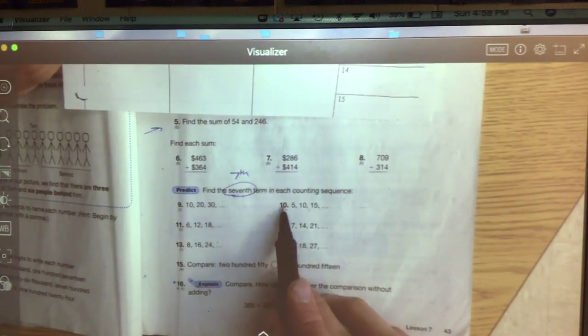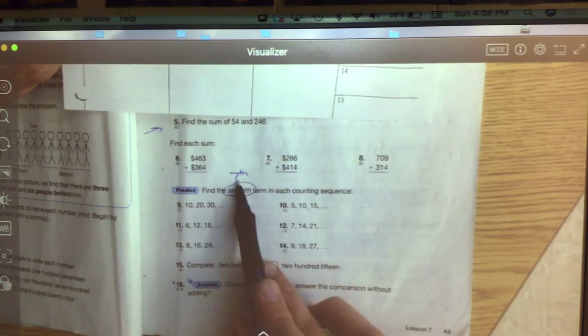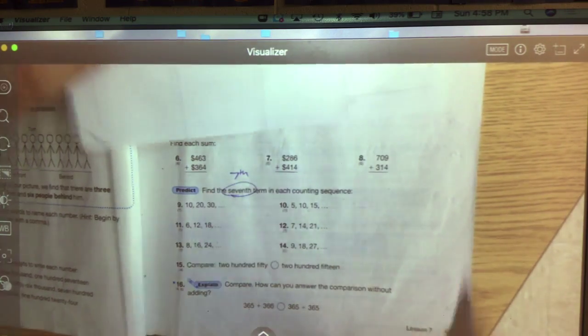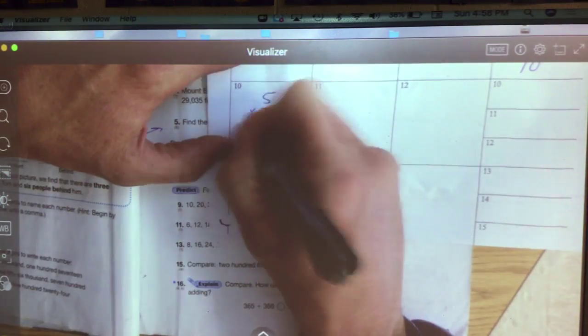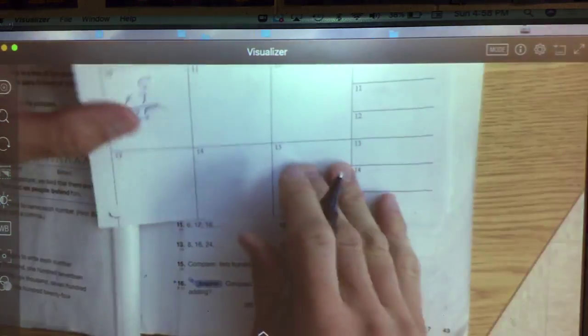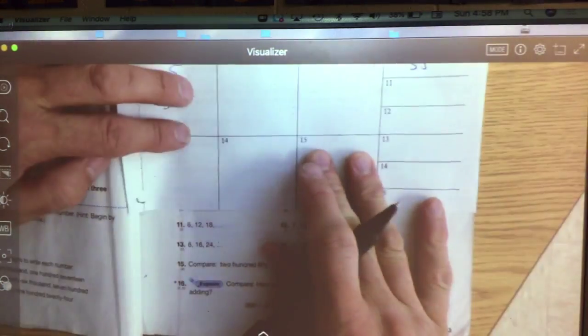Some of you guys were catching on to this the other day on our Zoom call and were pointing these little tricks out to me. The 10 one, 5, 10, 15, 20, 25, 30. Well, why don't I just take 5 times 7 and get 35. So 5 is what I'm starting with times the 7th term is 35. That's another way of doing it. Now if you like the old-fashioned way, you can do it.